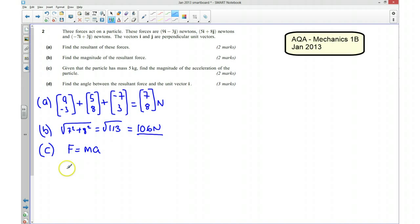Force is equal to mass times acceleration. And we know that this is going to be, and I'm going to use the root 113 here. So our force is going to be root 113 and that's equal to 5a. So my acceleration is going to be root 113 over 5. And if you step down into your calculator, that works out to be 2.13 meters per second per second.